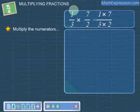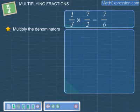First, multiply the numerators. So, we multiply 1 with 7. This gives 7. Next, we multiply the denominators. So, we multiply 3 with 2. This gives 6.